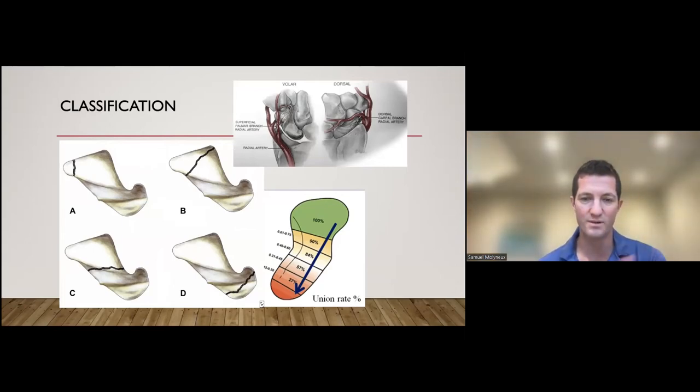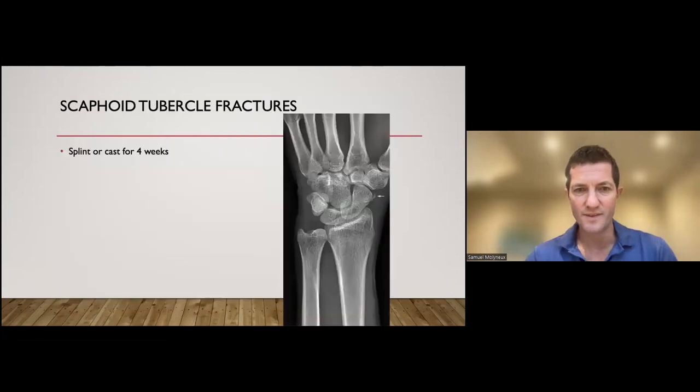The proximal pole fractures, you really have to think. Type D, you really have to be saying, I'm going to intervene on this as a routine. Whereas types B and C, you're much less likely to intervene unless there's significant displacement. Those scaphoid tubercle fractures, treat them with a soft tissue injury, splint them, let them do whatever they want, tell them they're going to be absolutely fine. I've hardly ever seen them cause any trouble.